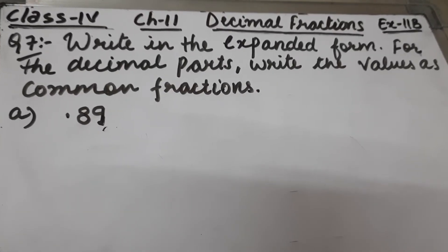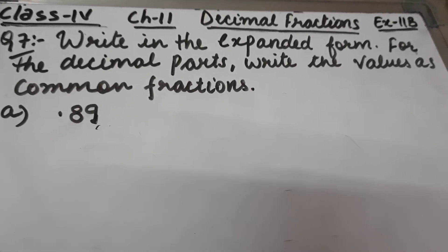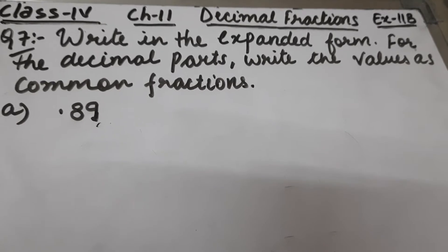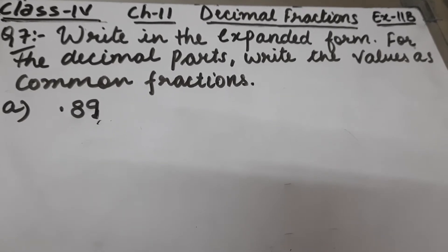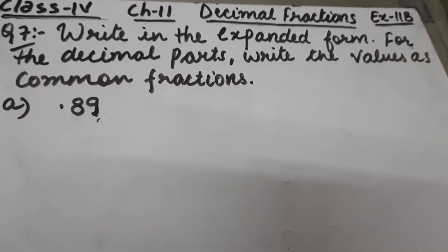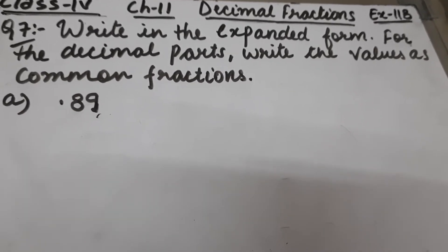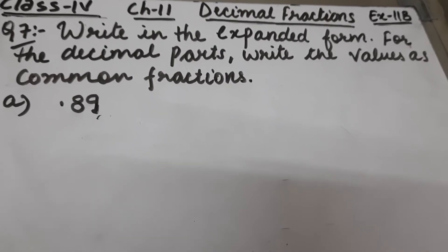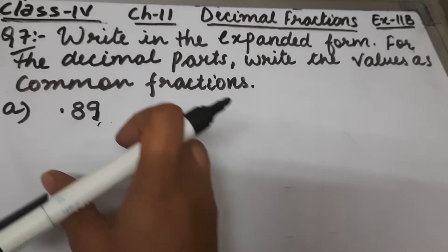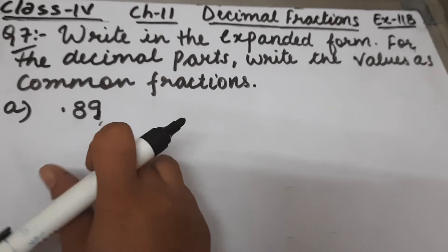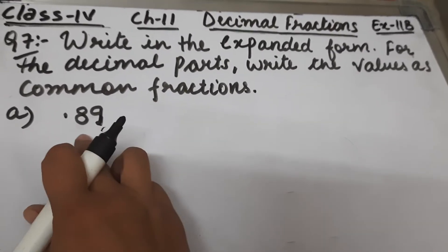Let's start question number 7 of exercise 11b. The question is: write in the expanded form, and for the decimal parts, write the values as common fractions.